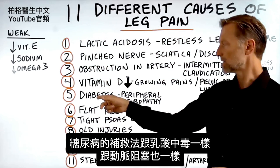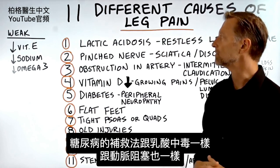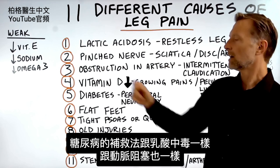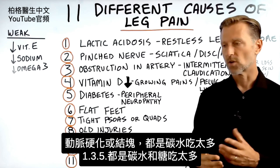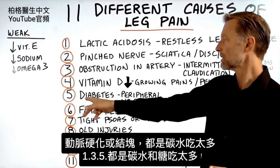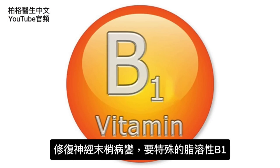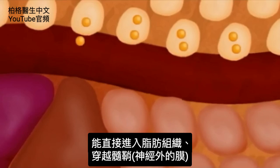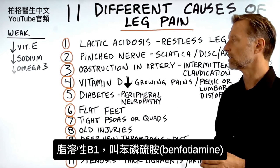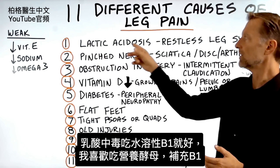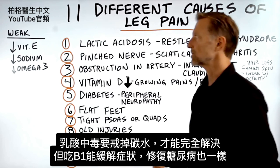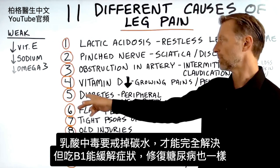The remedy for peripheral neuropathy is actually the same as for lactic acidosis and arterial obstruction, because arterial sclerosis, clotting, or plaquing usually comes from too many carbs or sugar. The remedy is vitamin B1, but you'd want to give it in a form that goes into the fat tissue — the myelin sheath, the outer part of the nerve. So you want something called benfotiamine. For lactic acidosis you can use a water-soluble B1, like nutritional yeast, but ultimately the core correction is getting rid of the carbs.